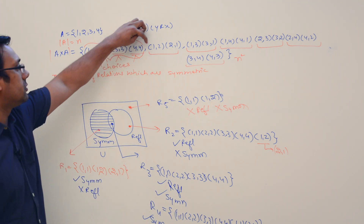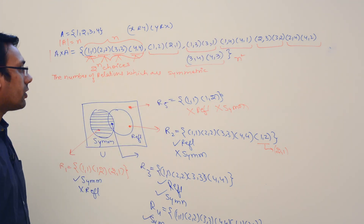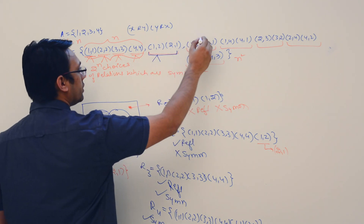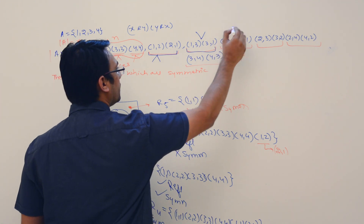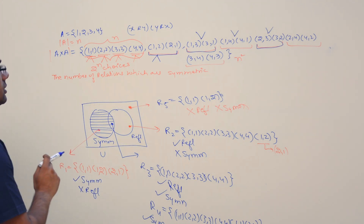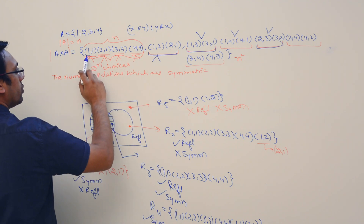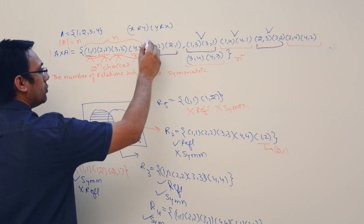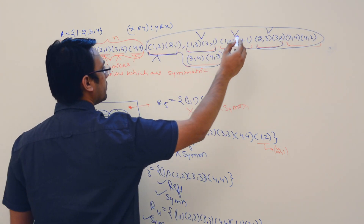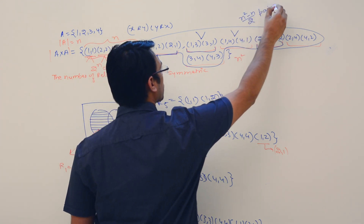We don't have a choice within a pair — if we include one element of the pair, the other must be there too. But for all these pairs we have two choices: either we include the complete pair or not. The total number of elements is n². Out of these, n are diagonal elements, leaving n² − n off-diagonal elements, which divide into n² − n / 2 pairs.